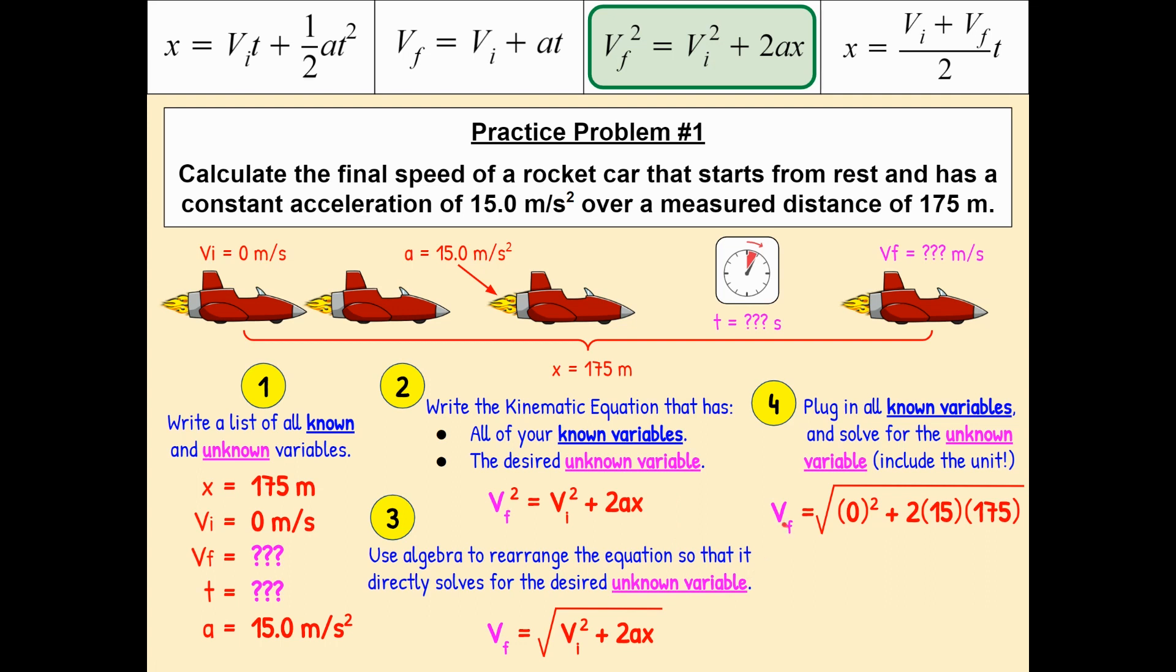So, here's our math. Vf, the final velocity of the rocket car, is equal to the square root of zero squared, which is kind of a weird math thing to do, but if you look over here, Vi squared is our first operation we should be doing, and that's zero because it started at rest, plus 2 times 15, because 15 was our acceleration, that's the rate at which the rocket car was accelerating, multiplied finally by 175, which was the displacement of the rocket car throughout this journey.